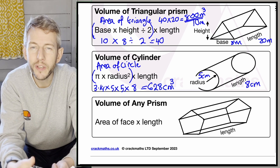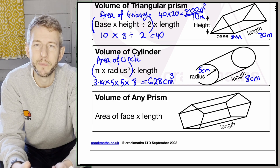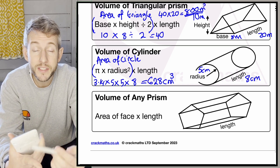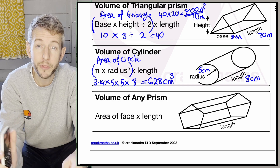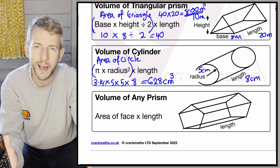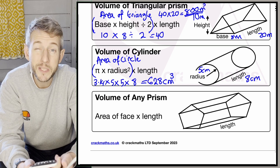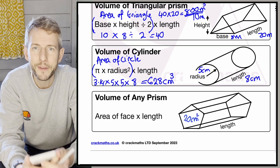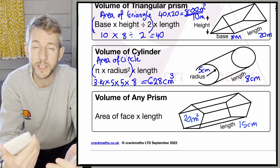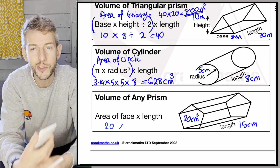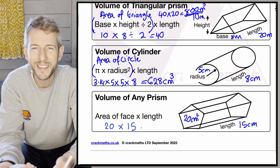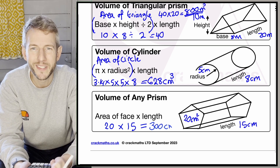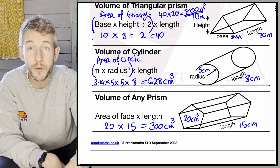For the last volume formula — the volume of any prism — it's simply the area of the face on the front times the length, giving that third dimension. For this pentagon, if the area of the front is 20 centimetres squared and the length is 15 centimetres, we do 20 times 15, which equals 300 centimetres cubed.